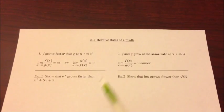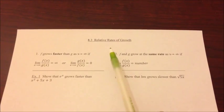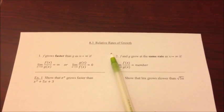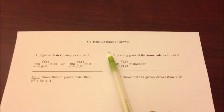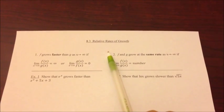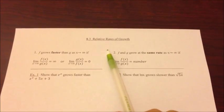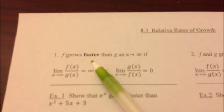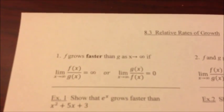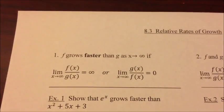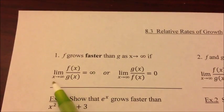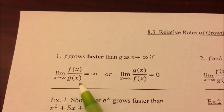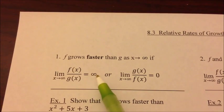This section is on 8.3 relative rates of growth. Using L'Hôpital's in some of these problems, we're going to see if one function is growing faster or slower than the other. One of the rules says that if f grows faster than g(x) as it approaches infinity, the limit as x approaches infinity of f(x) over g(x) is equal to infinity.